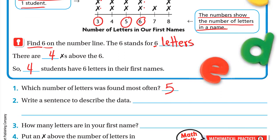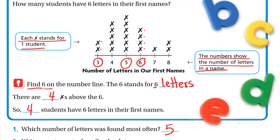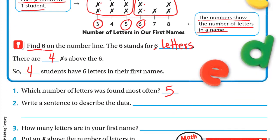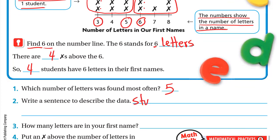Number two: Write a sentence to describe the data. If we look here at the line plot, we can see that the students with three to five letters in their names are more than the students with six to eight letters in their names. So we can say students with five letters in their names are more than students with six to eight letters.